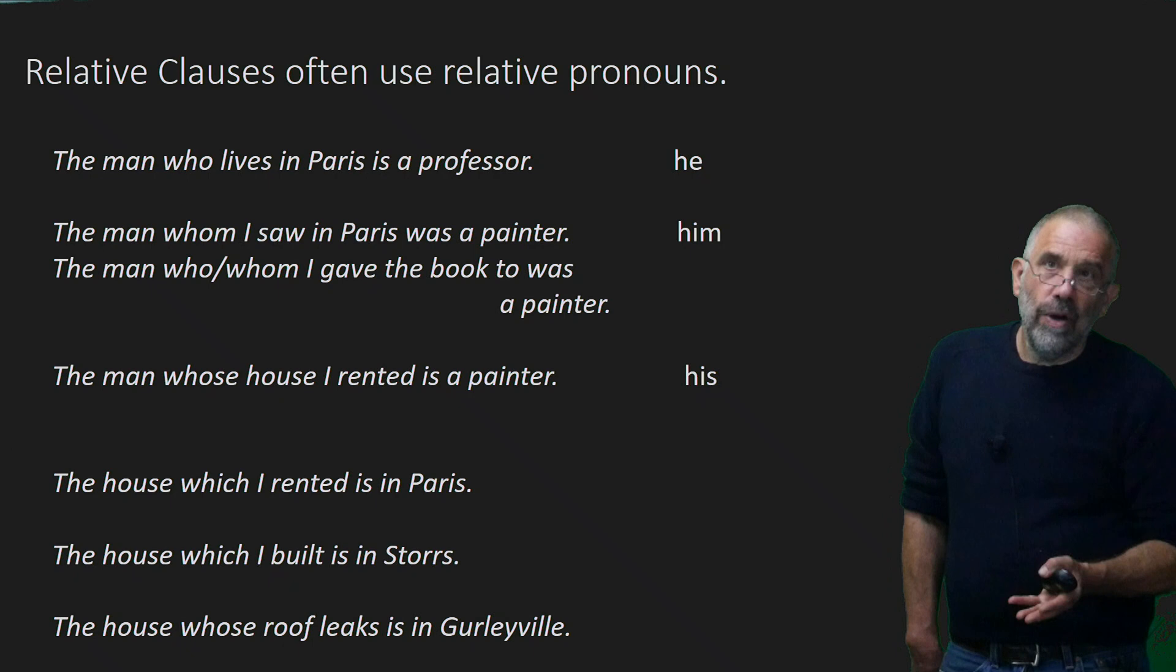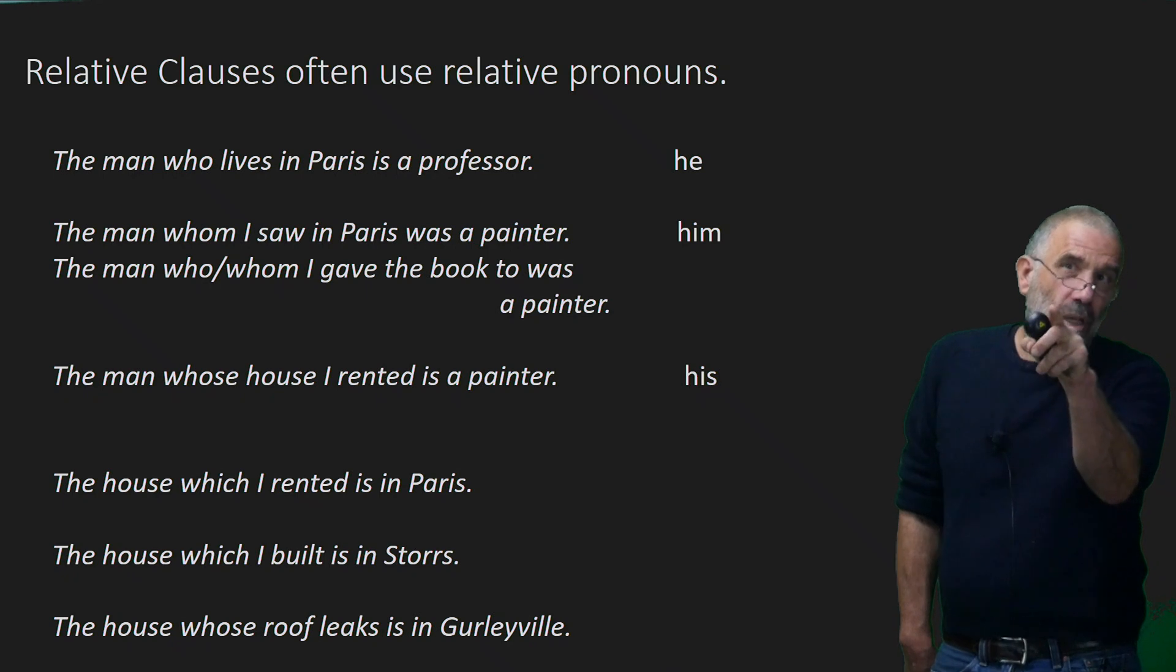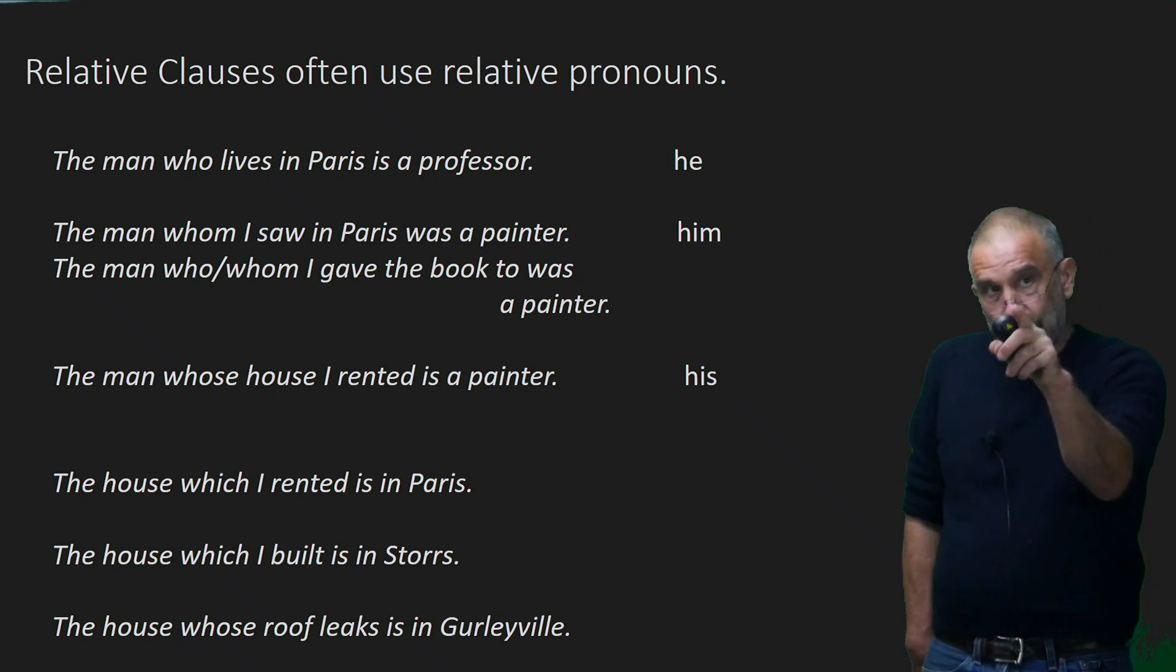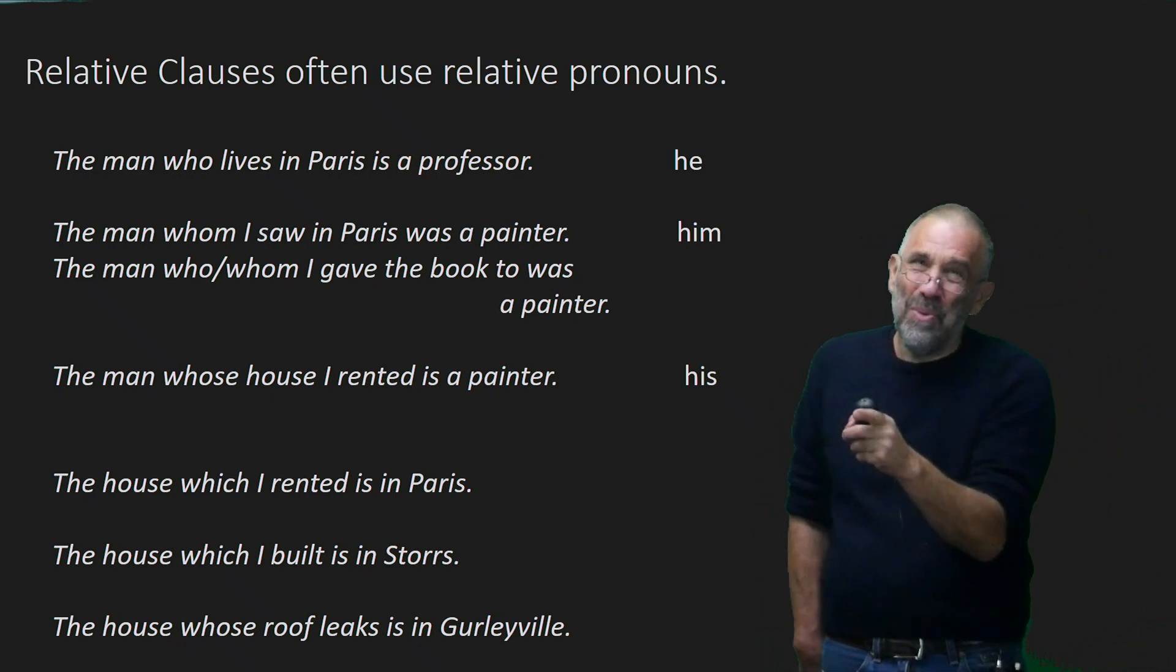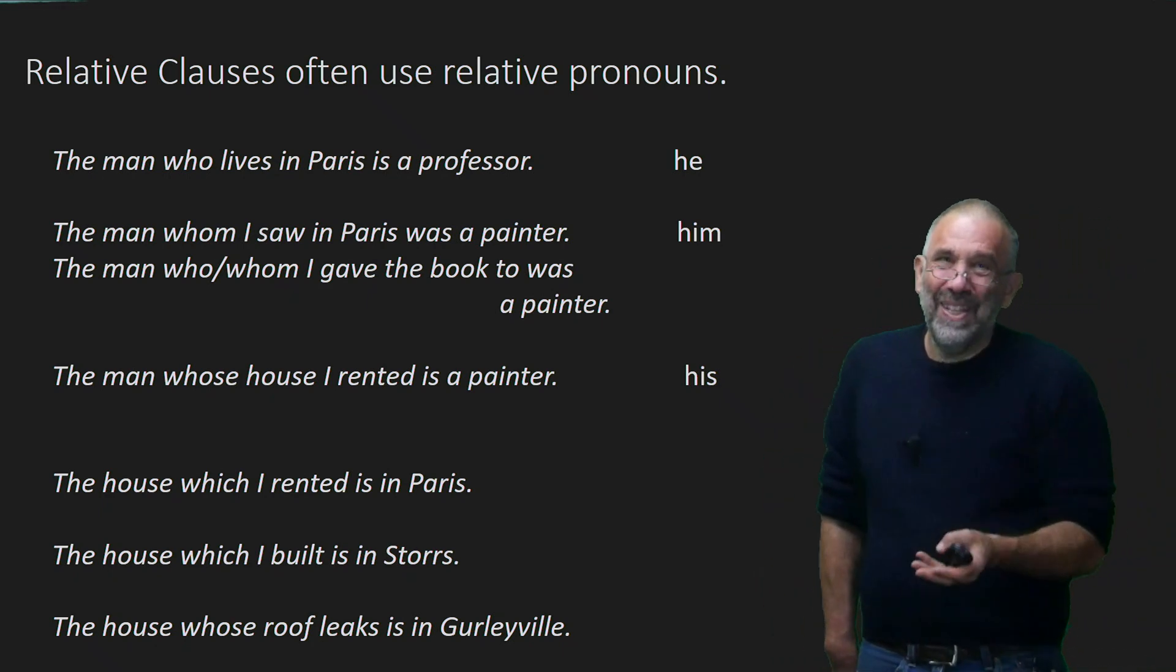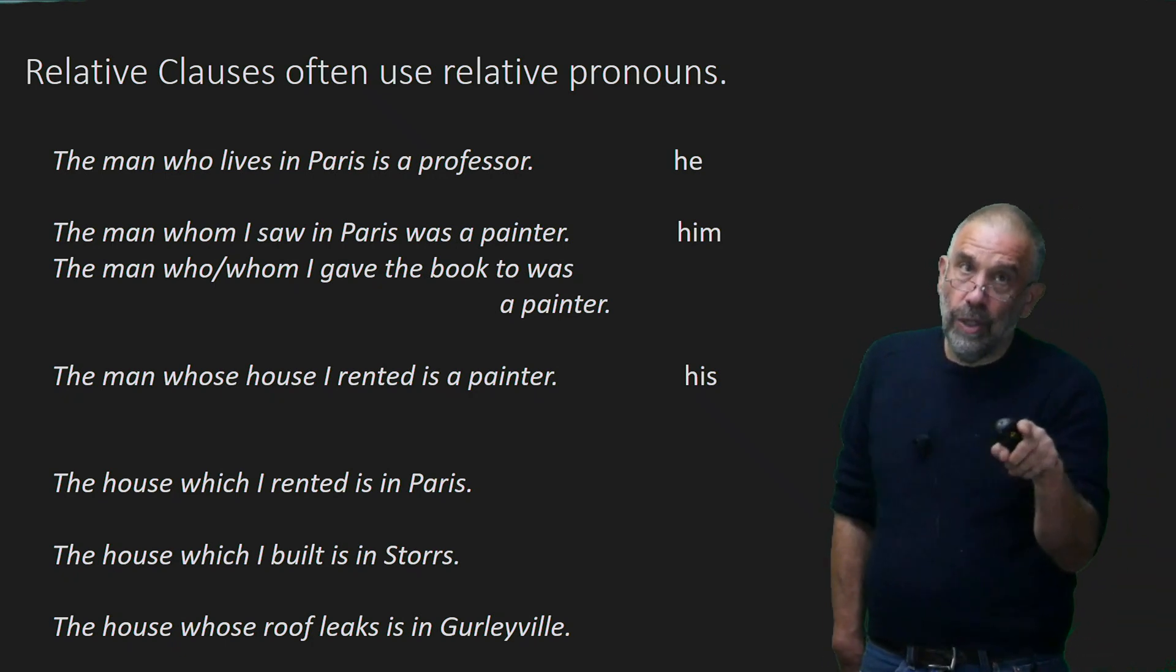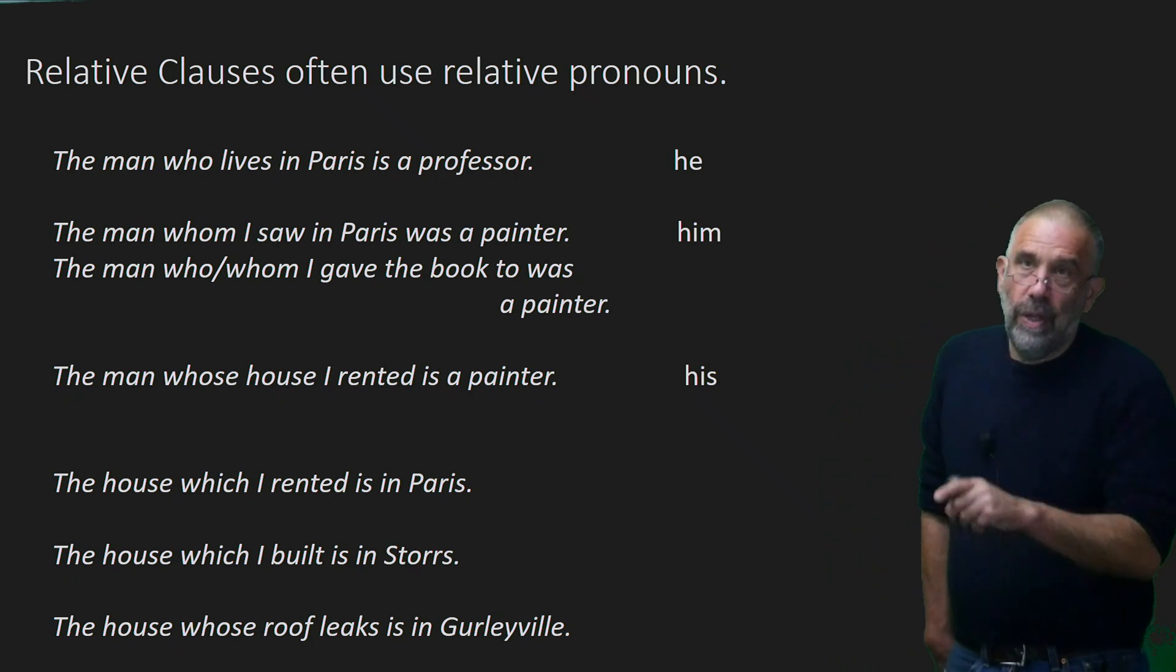The man who lives in Paris is a professor. So the who there functions as the subject of that relative clause. And so it's kind of cool that it patterns with the he forms. The she pronouns don't work quite as nicely on this. So I'm not being unfair to women at this point. It's just easier to see these endings if we use the third singular male pronoun.